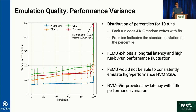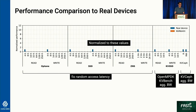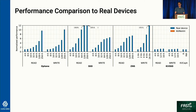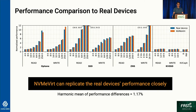Since NVMe BERT does not rely on virtualization technology at all, it provides very clean, low latency with little performance variation. We also tuned our model to replicate the performance of real devices. Comparing BERT instances against real devices, BERT can replicate real device performance very closely — the harmonic mean of the performance difference is only 1.17%.